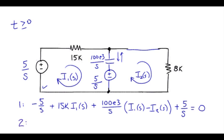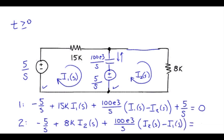In mesh number 2, I'll start in the lower left corner down here. We have minus 5 over S plus 8K times I2 of S. Don't forget the capacitor impedance, 100 times 10 to the third divided by S. Now we have I2 heading up from the bottom. I1 is going in the other direction. Set that equal to zero.